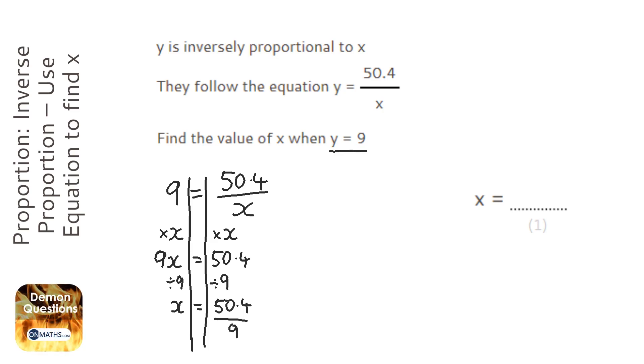Or I can do this another way. Basically, whenever you've got a number equals a fraction and the x is at the bottom, you can just switch those two over, which is essentially what I've done by multiplying both sides by x then dividing both sides by 9.